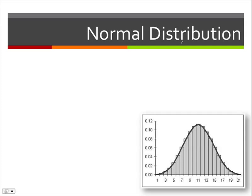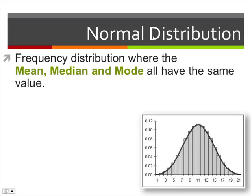Hello everyone and welcome to our lesson today on 13.7 normal distribution. A normal distribution is a frequency distribution where the mean, median, and mode all have the same value. So all those measures of central tendency line up right at one value — in this case it would be 11.